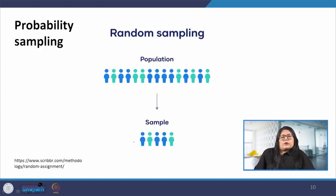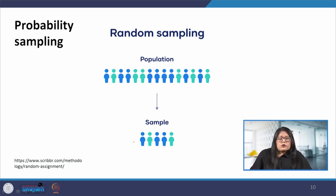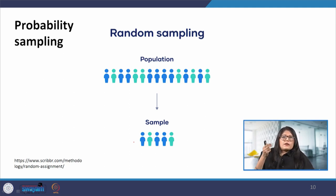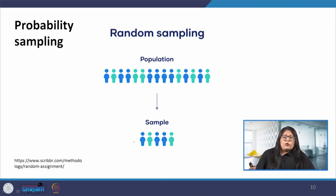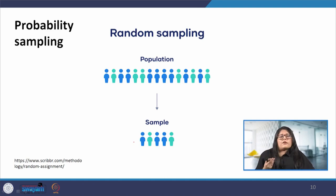In simple random sampling, every member of the population has an equal chance of being included in the study. The sampling frame should include the overall population, and we can use tools like random number generators or other methods. For example, if we require a simple random sample of students in the mess food to assess quality, we can assign numbers to every student in the database from 1 to 800 and then use a random generator to select 100 students for their feedback.